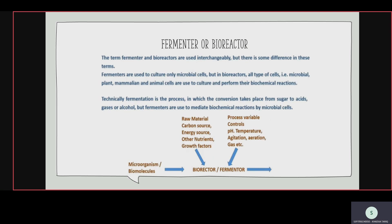The terms fermenter and bioreactor are used interchangeably, but there is a difference. A fermenter is used only for microbial cells — only microorganisms. But in a bioreactor, all types of cells are used: plant, mammalian, animal, and microbial cells can all be cultured. Fermentation is a process, but a fermenter is an instrument that provides the environment for fermentation to take place.